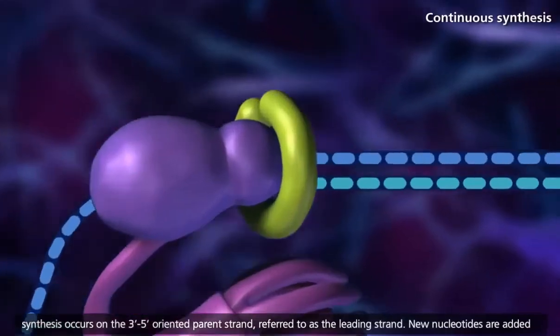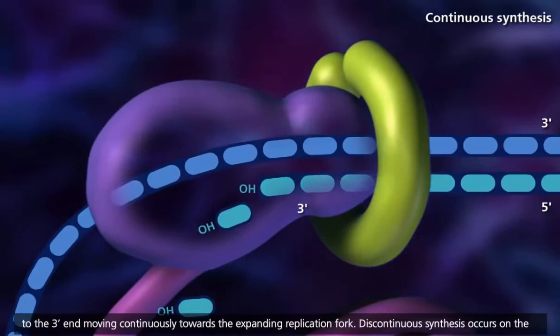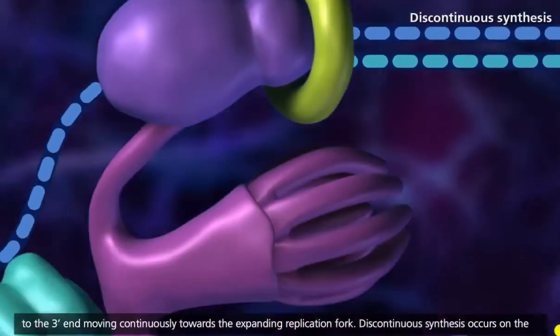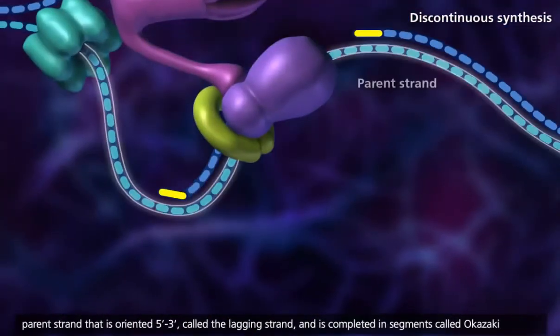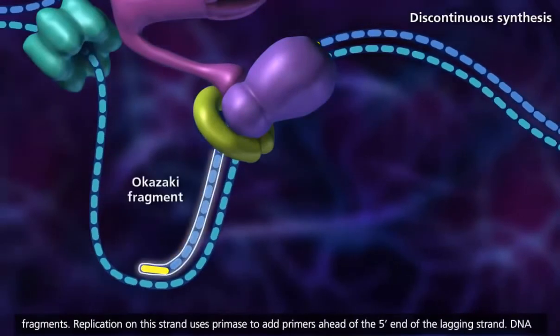New nucleotides are added to the 3' end, moving continuously toward the expanding replication fork. Discontinuous synthesis occurs on the parent strand that is oriented 5' to 3', called the lagging strand, and is completed in segments called Okazaki fragments.